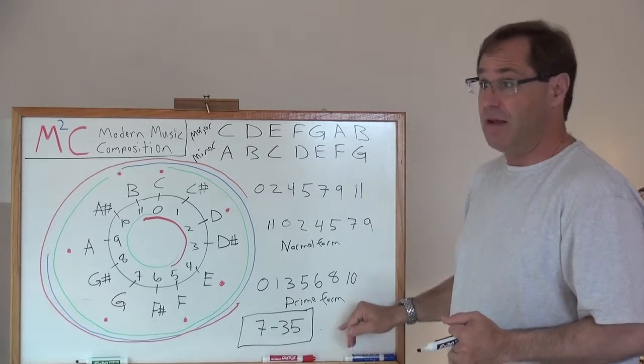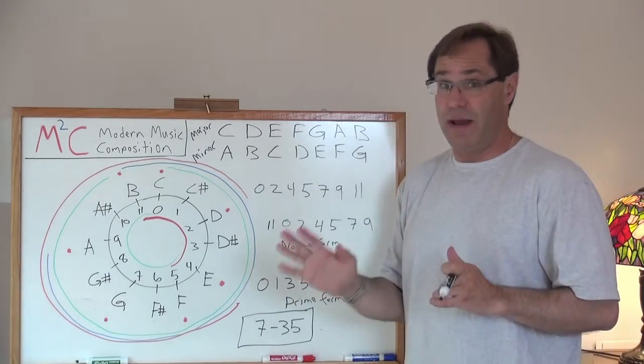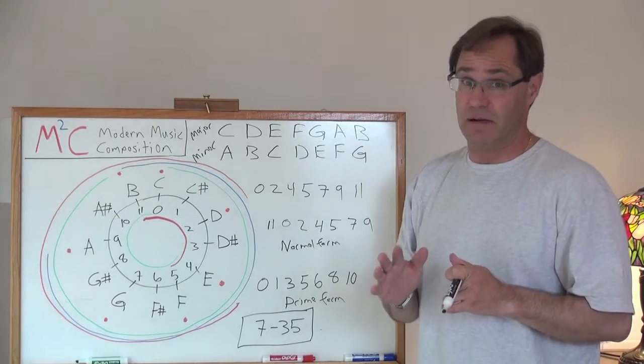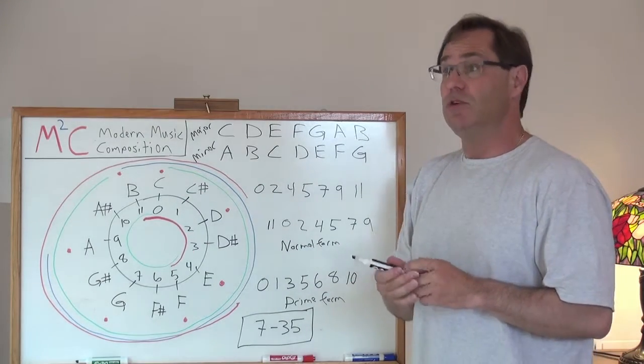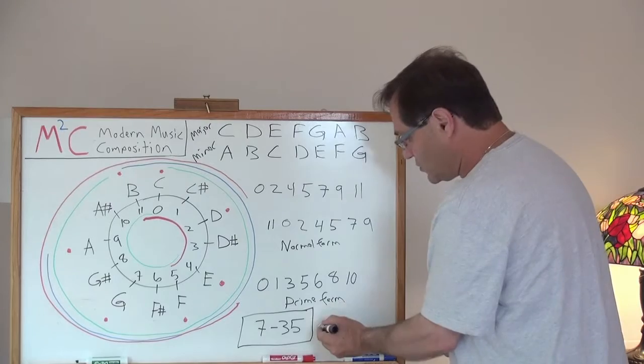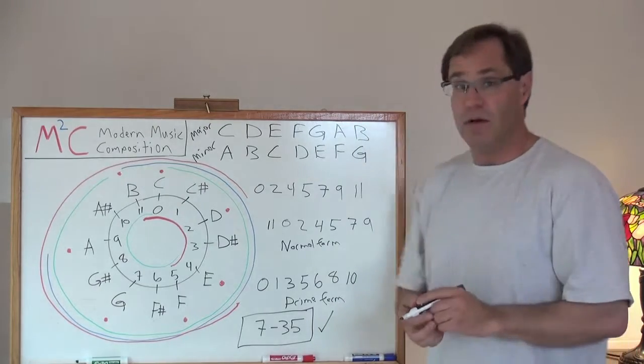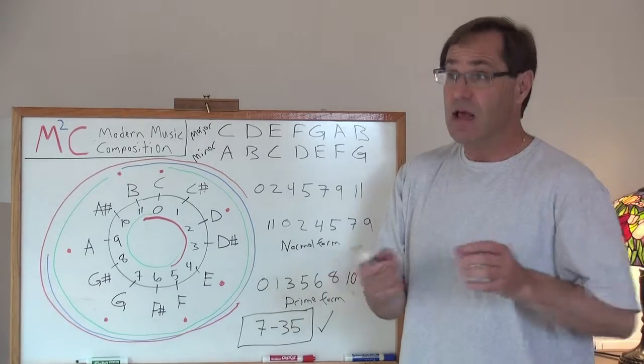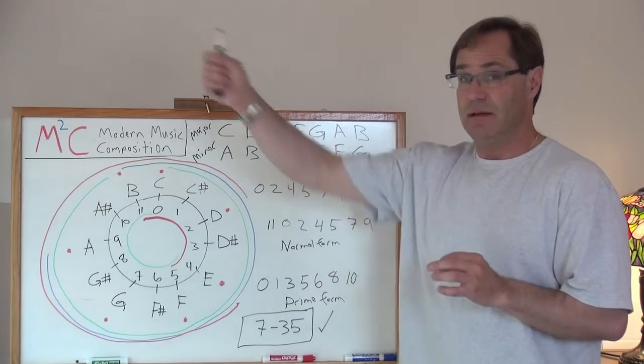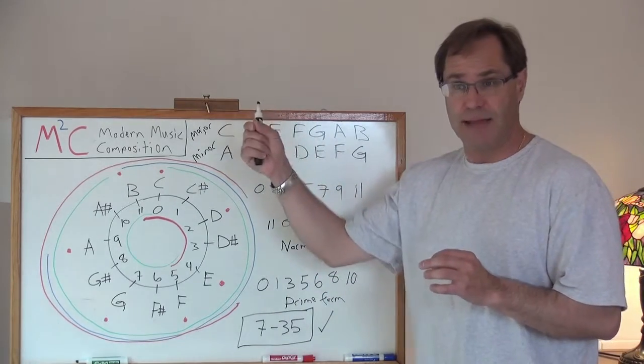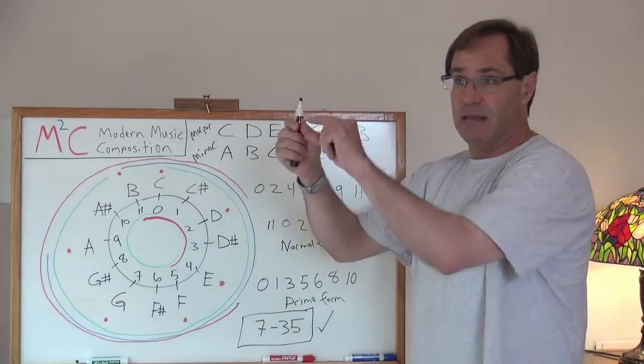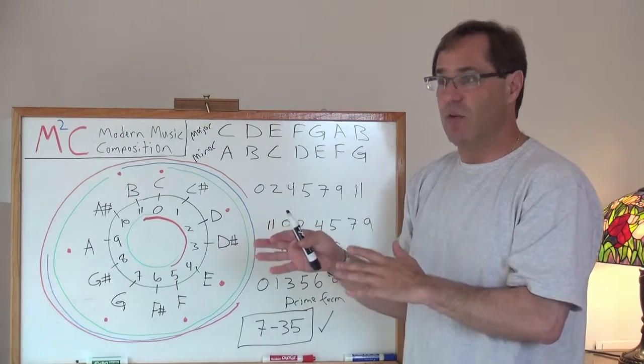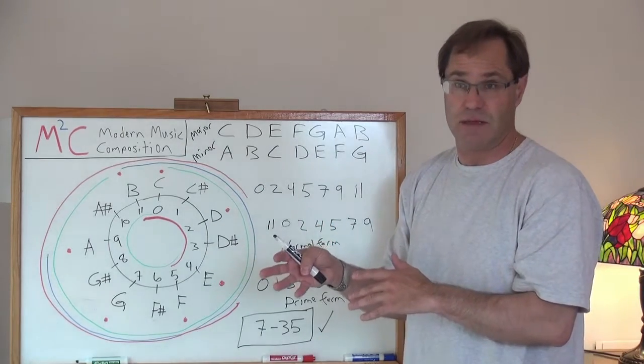Set theory is used quite a bit in both tonal music and atonal, but in particular, atonal music. Here's one strategy. You can start with a set class, derive many different scales or chords from that set class, and interrelate those in your piece of music. And that's a very standard way of composing atonal music.